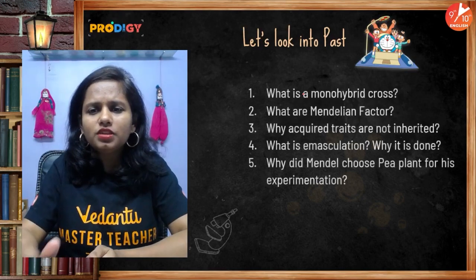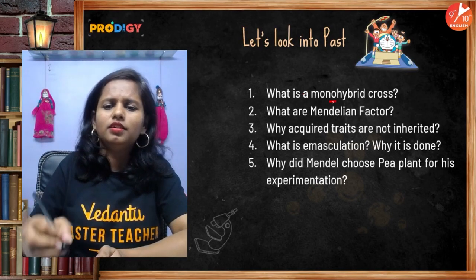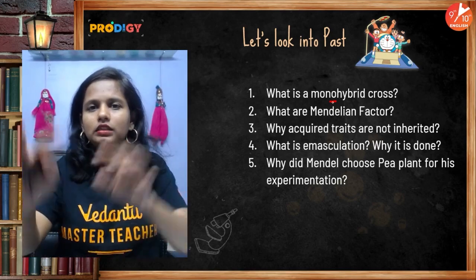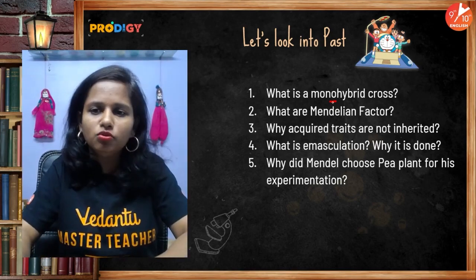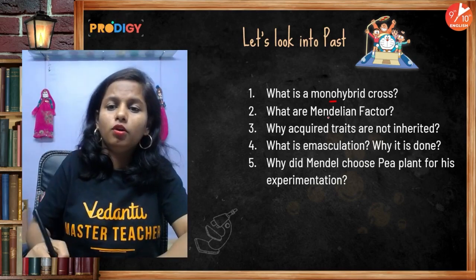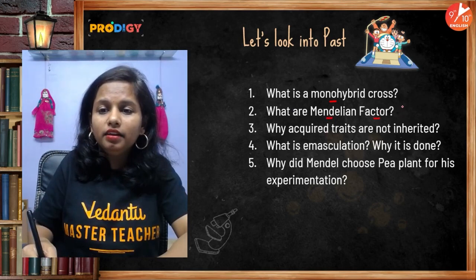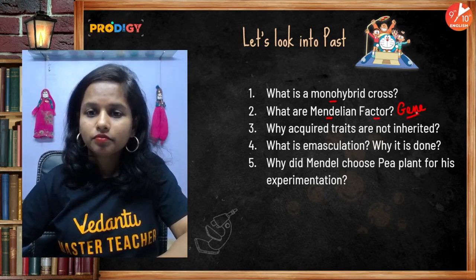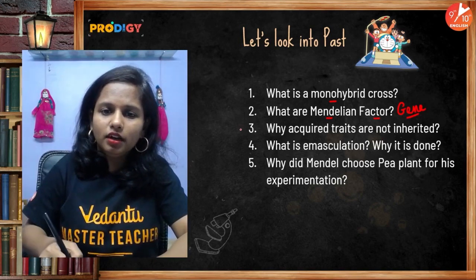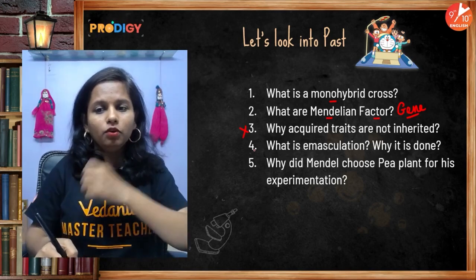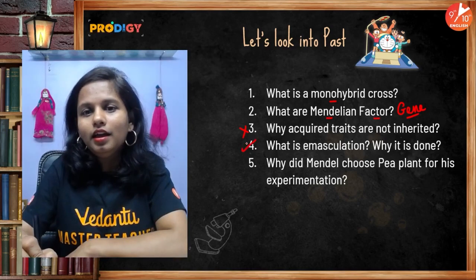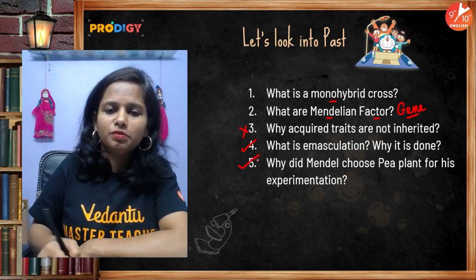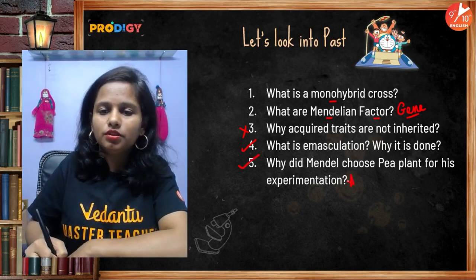Some highlighted exam questions: previously they asked what a monohybrid cross is, but now they give you a cross and ask for the ratio or whether it is monohybrid or dihybrid. What are Mendelian factors — Mendel used the term 'factors' to address a gene. Why did Mendel choose pea plants for experimentation is a very important question. Emasculation is also important though not directly mentioned in the book.